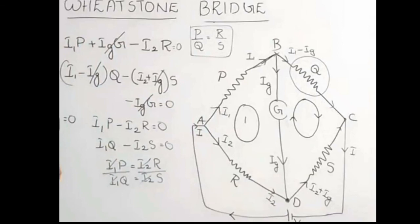From the two balanced equations I1·P = I2·R and I1·Q = I2·S, we divide one by the other. This gives P/Q = R/S. This is the fundamental balance condition of the Wheatstone Bridge, and it allows us to find the unknown resistance from the known resistance values.